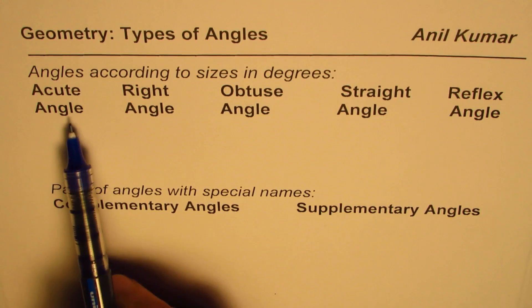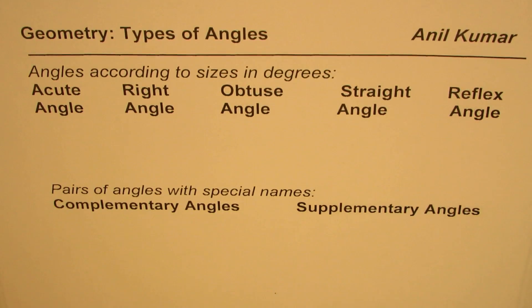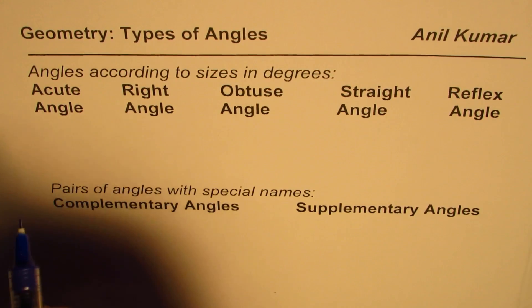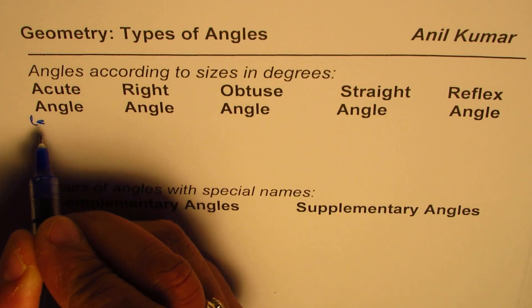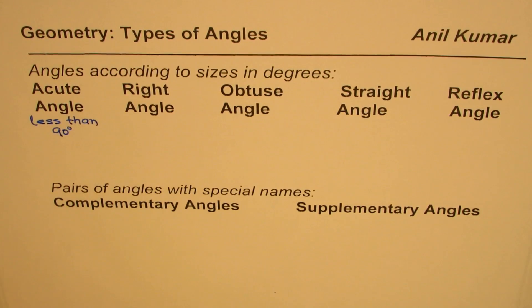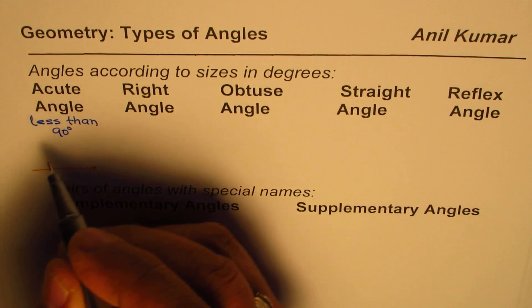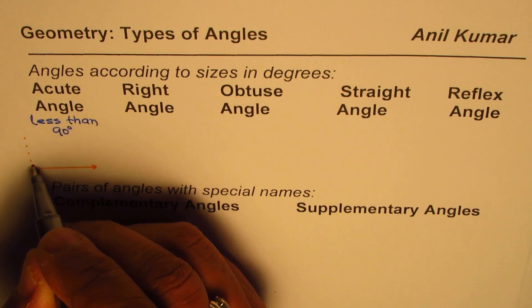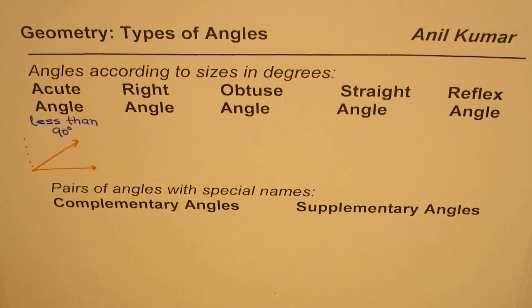You must have heard names like acute angle, right angle, obtuse angle, straight angle, and reflex angle. Acute angles are the angles which are less than 90 degrees — that means from 0 to 90 degrees. Let me sketch one for you: if that is your initial arm, any angle which is less than 90 degrees is called an acute angle.